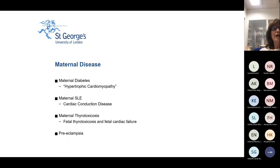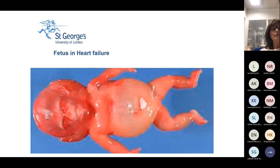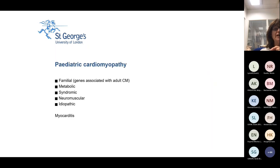Maternal thyrotoxicosis may well also cause problems. And of course there's pre-eclampsia, which may well be the start of a lot of cardiac problems later on. Babies can present in utero with fetal hydrops, which is often caused by cardiac failure at that stage.